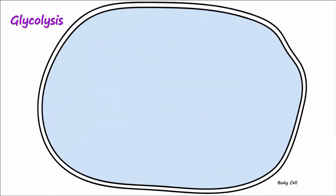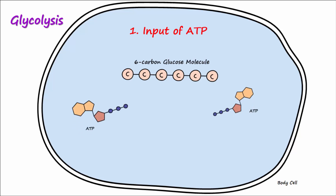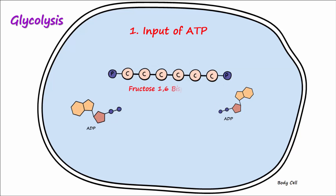Glycolysis begins with a six-carbon glucose molecule in the cytoplasm of a cell. For the first step, input of ATP, two ATP molecules will each lose a phosphate group that attaches to the six-carbon glucose molecule. After the two ATP lose their phosphate group, they are left as ADP molecules, and a new molecule known as fructose 1,6-bisphosphate has been created.